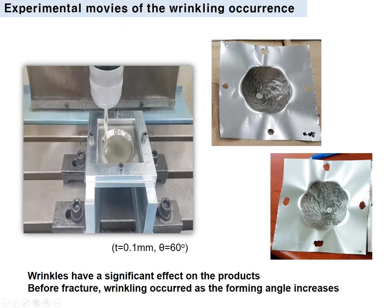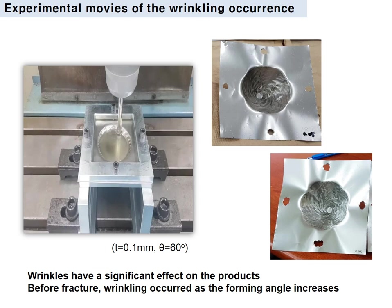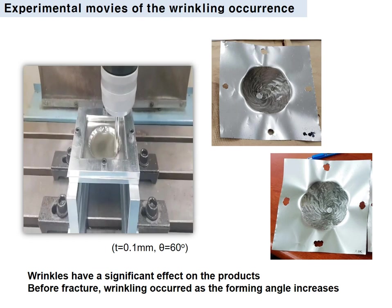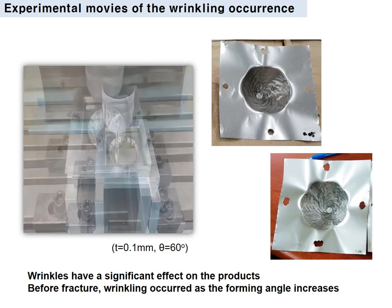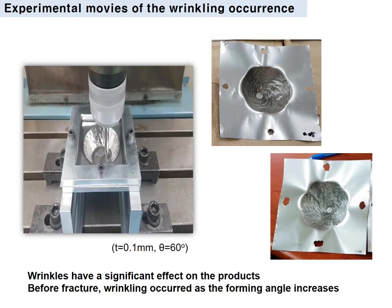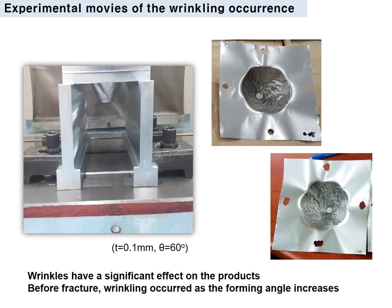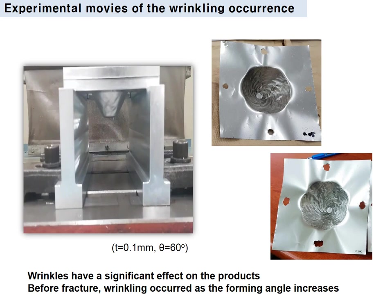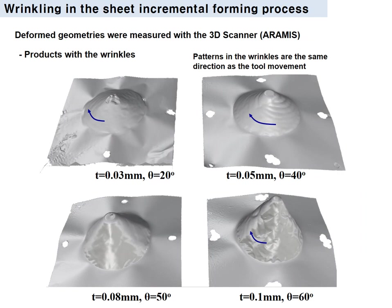Now I will discuss the formation of wrinkling. The wrinkle in the curved shape was formed during the forming process. This movie presents the incremental forming process with a thickness of 0.1 mm and an angle of 60 degrees. As you can see in the movie, the wrinkle was formed at an early stage of the forming process. Wrinkles have a significant effect on the product. Before fracture, the wrinkle occurred as the forming angle increases. The manufactured geometry was evaluated through 3D scanning. The patterns in the wrinkle are in the same direction as the tool movement.